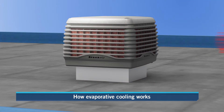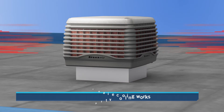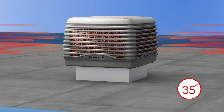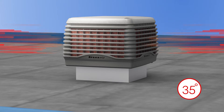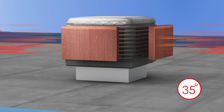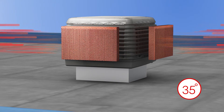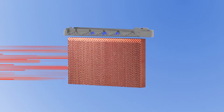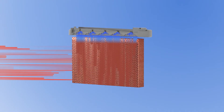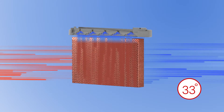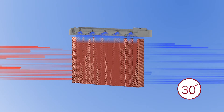As the name suggests, an evaporative air conditioner uses the principle of evaporation to cool air. The process begins when hot and dry outside ambient air is drawn through a series of water-saturated cooling pads. This hot incoming air stream provides the heat energy for evaporation. As it passes through the cooling pads, the water evaporates and the heat in the air is absorbed, which lowers the temperature of the air.